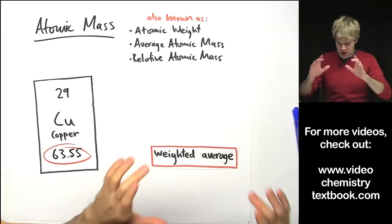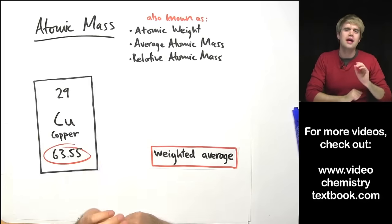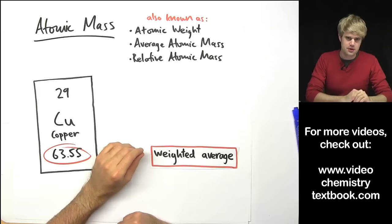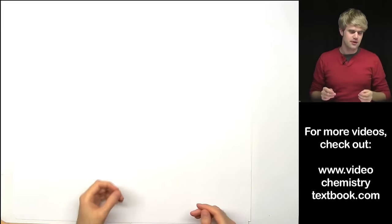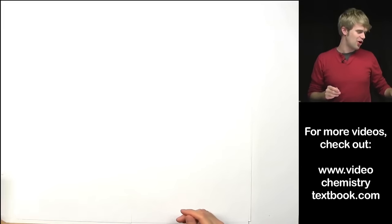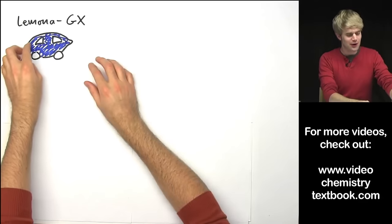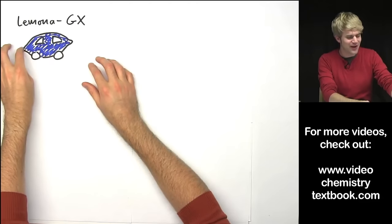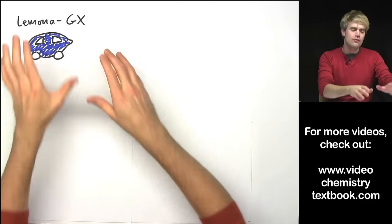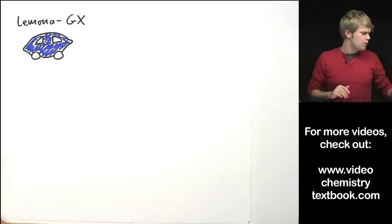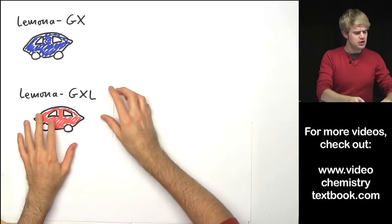So we're going to start out by talking about weighted average using an analogy to cars. Let's imagine that there is a type of car called the Lamona and the Lamona is called the Lamona because it looks like a lemon. It has this very distinct shape. For the purposes in this video we'll imagine that the Lamona comes in two models.